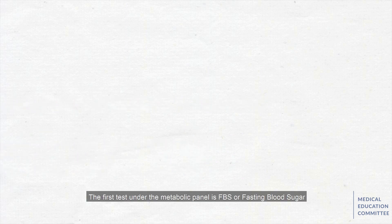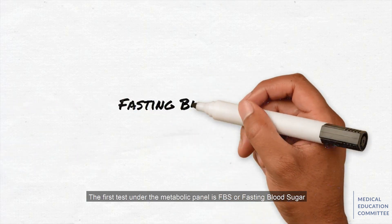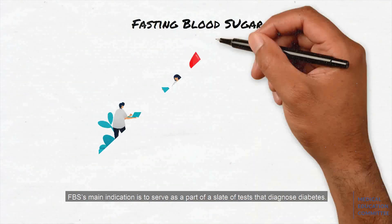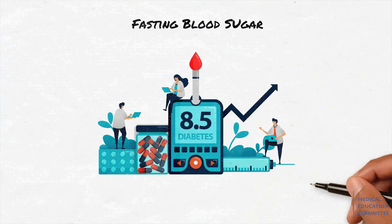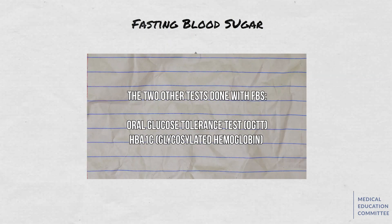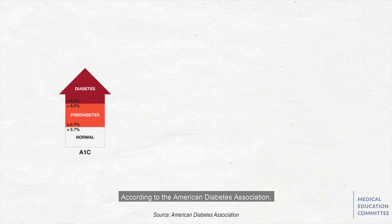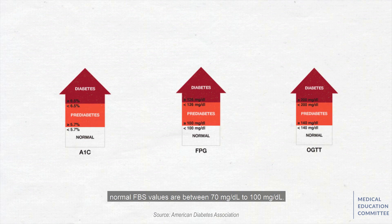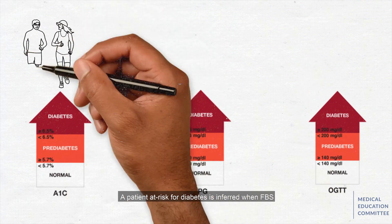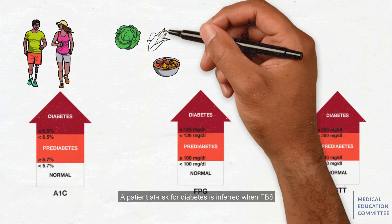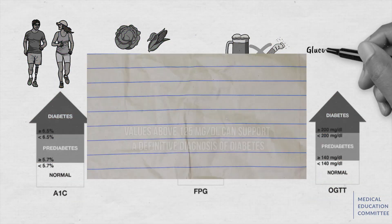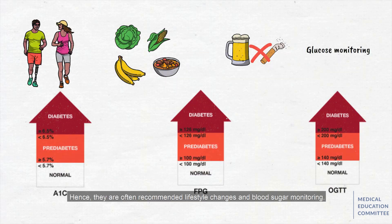The first test in the metabolic panel is FBS, or fasting blood sugar. FBS's main indication is to serve as part of a slate of tests that diagnose diabetes. According to the American Diabetes Association, normal FBS values are between 70 and 100 mg per deciliter. A patient at risk for diabetes is inferred when FBS is between 100 and 125 mg per deciliter, hence there are often recommended lifestyle changes and blood sugar monitoring.